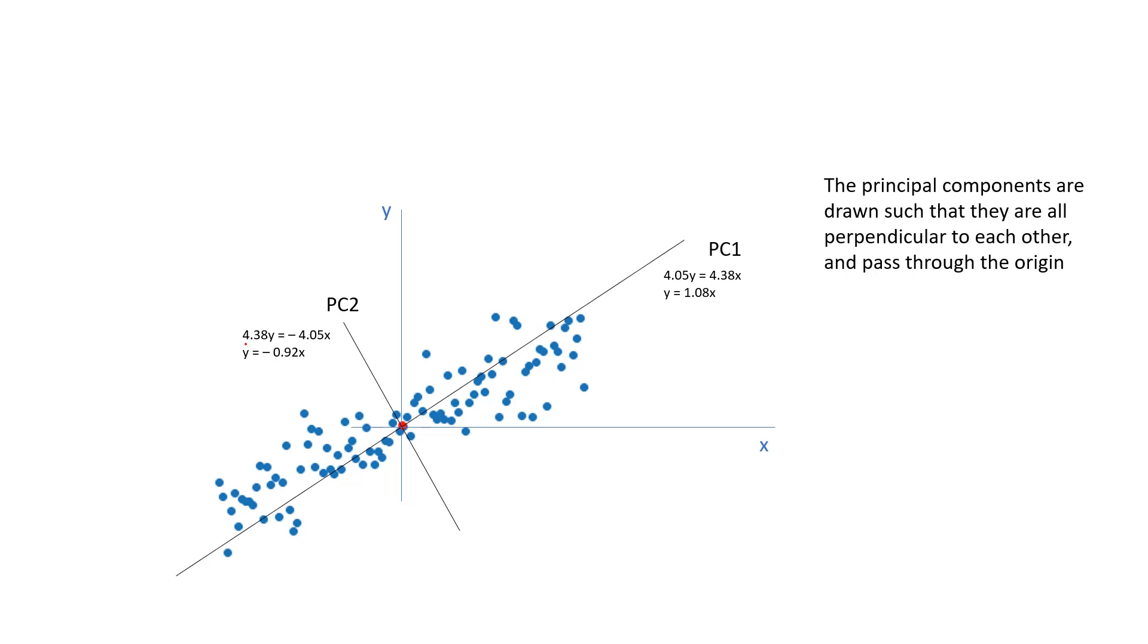The equation of this line is 4.38y is equal to minus 4.05x or y is equal to minus 0.92x. Because this is perpendicular, the slopes of these two should be, after multiplying the slopes of these two, we should get minus 1.